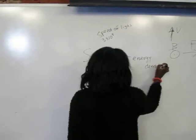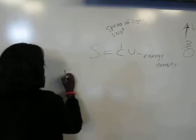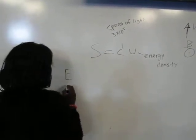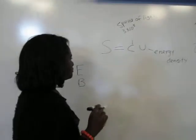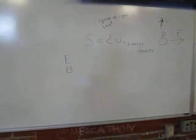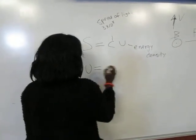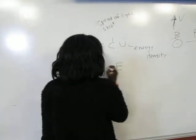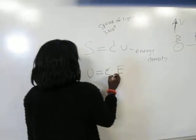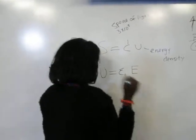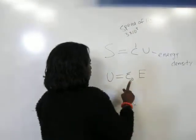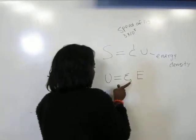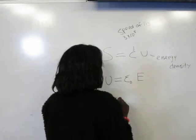This problem is asking us to find both E, the electric field, and B, the magnetic field. Conveniently, the energy density is related to the electric field. Energy density is proportional to the electric field, and the constant that relates them is epsilon naught, the electric permittivity of free space.